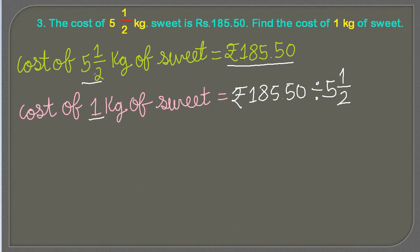...the cost of one kg of sweet must equal rupees 185.50 divided by five and a half. The reason we are dividing is that before it was the cost of five and a half kg, so we divide both sides by five and a half to get the cost of one kg.